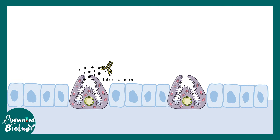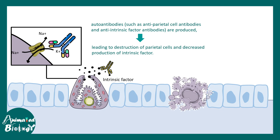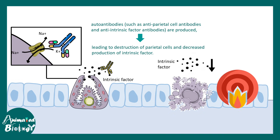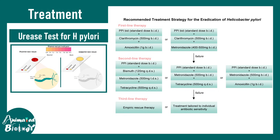Antibodies can also be generated against Castle's intrinsic factor or the sodium-potassium ion exchange pump, both leading to destruction of parietal cells. This reduces production of Castle's intrinsic factor, which is essential for absorption of vitamin B12. When vitamin B12 is malabsorbed, there is an increased chance of anemia, since B12 is critical for DNA synthesis — anemia is a secondary effect of this autoimmune process.